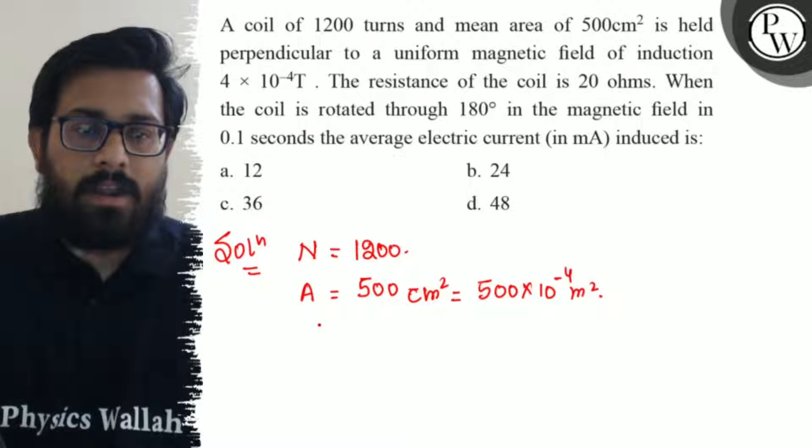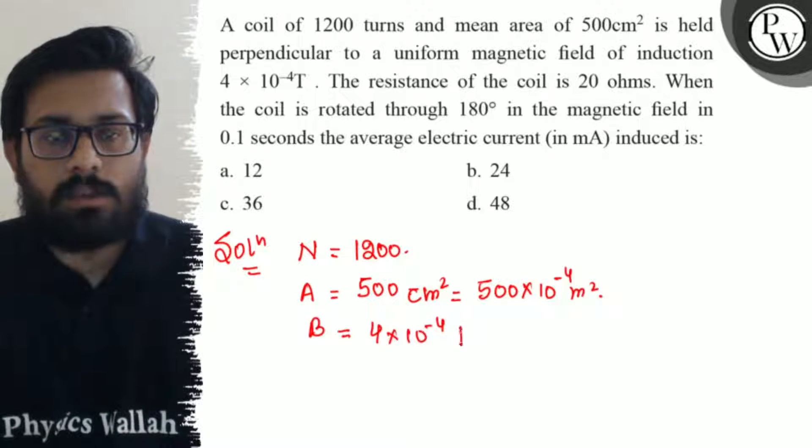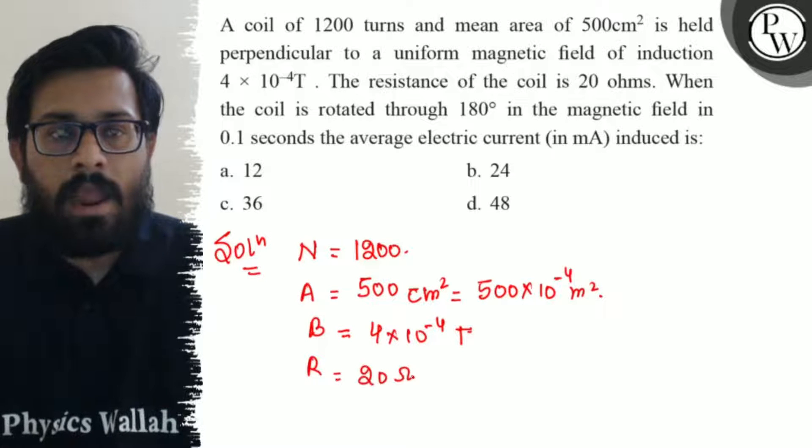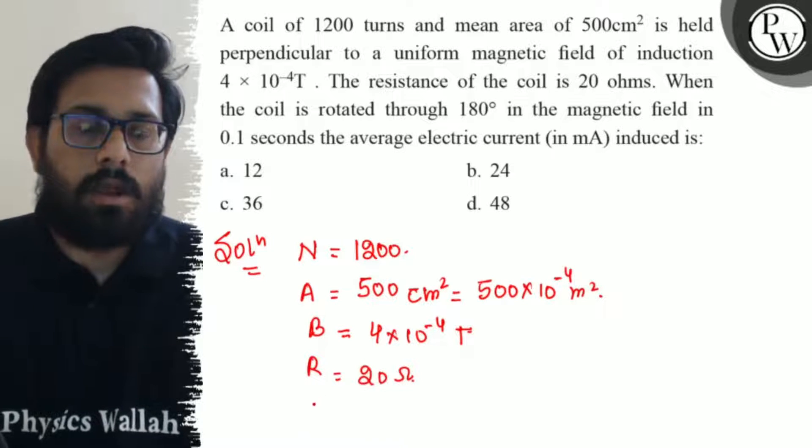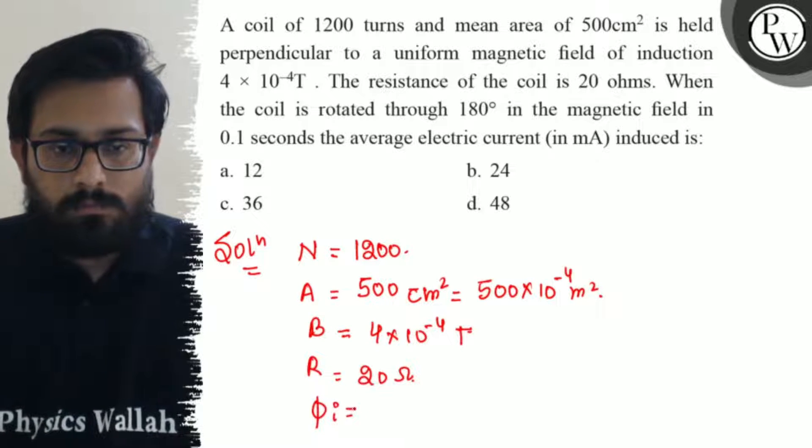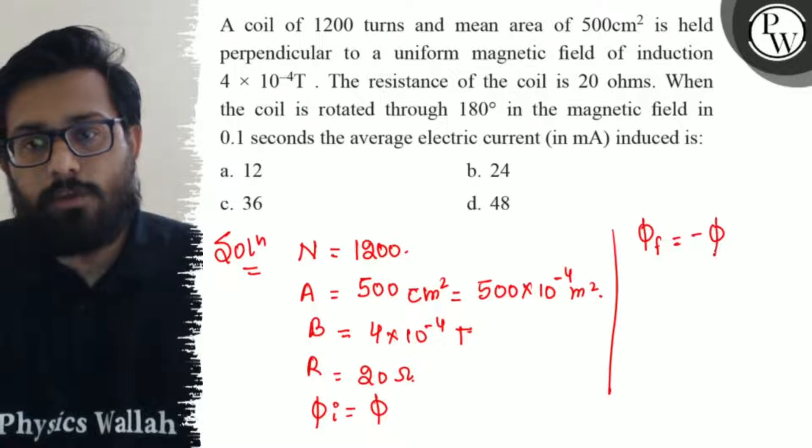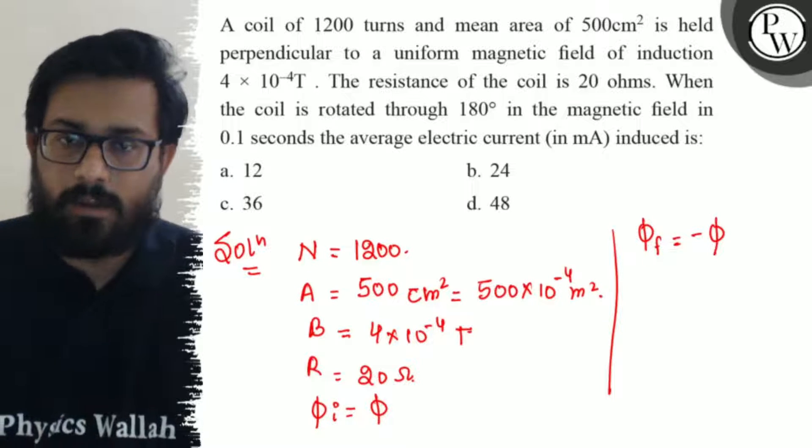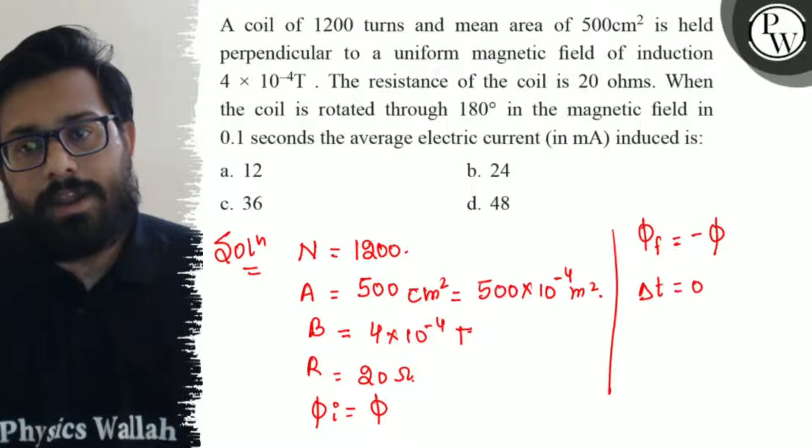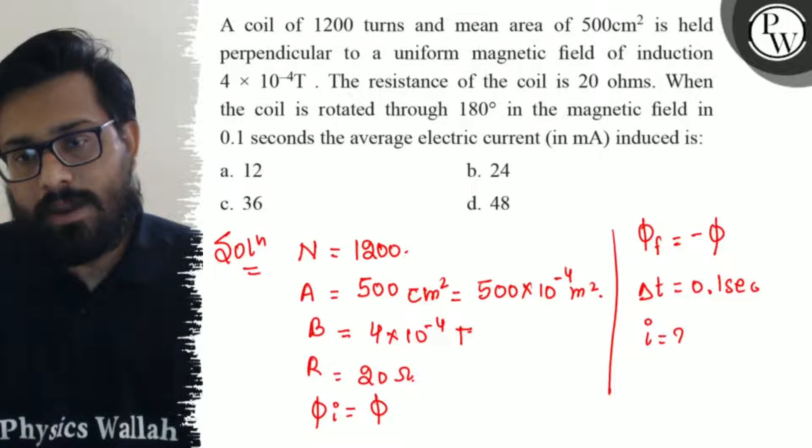And the coil is rotated through 180 degrees. So if my initial flux is φ, then the final flux will be -φ, because I rotated the coil 180 degrees. And time interval is also given as 0.1 second. And we have to calculate the average current induced.